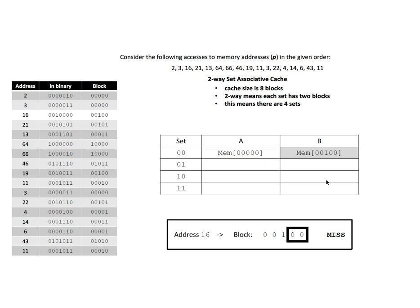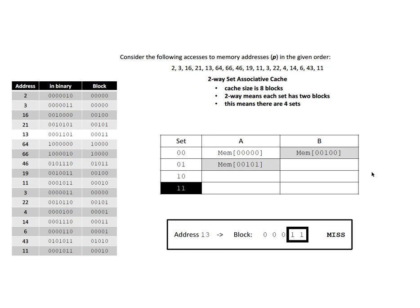We move the block containing address 16 into the open space in the set. The next address is 21, which is in block 00101. There's nothing in that set, so this is a miss, and we add it to the first available position in that set. The next block is 0011 — again nothing in that set, so it's a miss, and we add it to the cache.